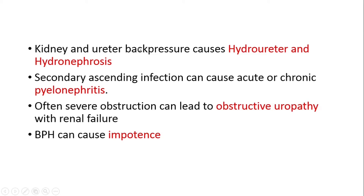Back pressure on the kidney and ureter will develop hydroureter and hydronephrosis. If severe enough, this will lead to obstructive uropathy with renal failure. Secondary ascending infection can also occur because of urinary stasis, leading to pyelonephritis. BPH can also cause impotence.